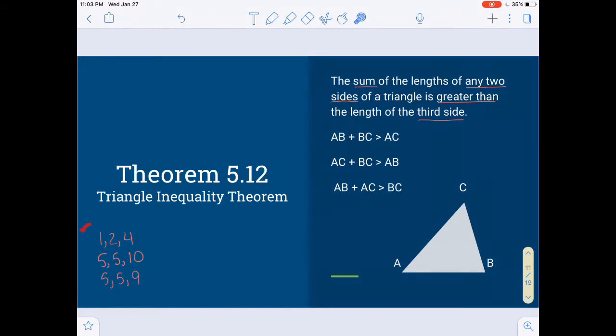So here we'll test these three sets of lengths to see whether or not they will make a triangle. So the first one, 1, 2, and 4. Well, if you add 4 and 2, that's definitely bigger than 1. Or if you add 1 and 4, that's definitely bigger than 2. But if you add 1 and 2, that's only 3. And that is not bigger than 4. So that combo will not make a triangle.